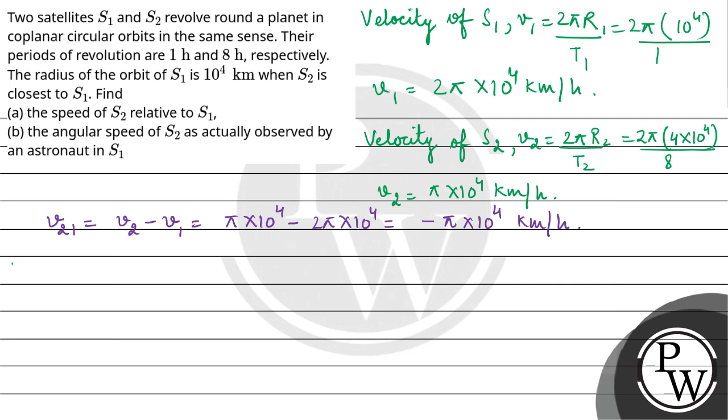In part B, we need to find the angular speed of S2 as observed by an astronaut on S1. The relation is ω = V/R, so relative angular speed is (V2 - V1) divided by the distance between them.